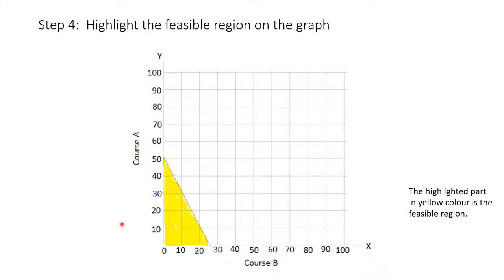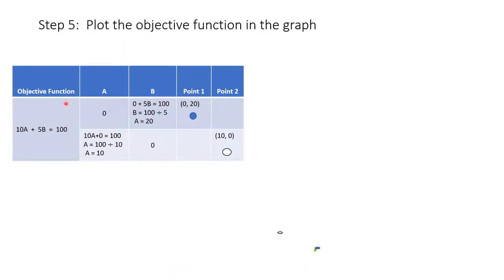Step 5 is to plot the objective function on the graph. Going back to our objective function 10A + 5B = 100, we solve for the coordinates. When A = 0: 0 + 5B = 100, so B = 20. When B = 0: 10A + 0 = 100, so A = 10. So plot 1 is (0, 20) and plot 2 is (10, 0). We now have the objective function line on the graph alongside the constraint line.